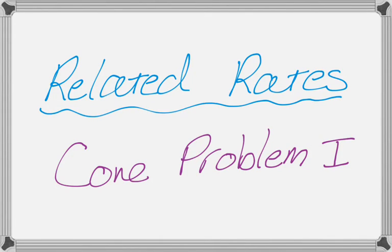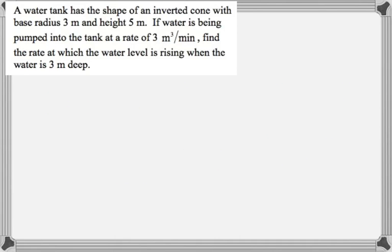Okay, so in this video we're going to do a related rates problem, and it's a problem about a cone, which is a very common type of related rates problem. Let's take a look at it. We have a water tank that has the shape of an inverted cone with base radius 3 meters and height 5 meters. If water is being pumped into the tank at a rate of 3 cubic meters per minute, find the rate at which the water level is rising when the water is 3 meters deep.